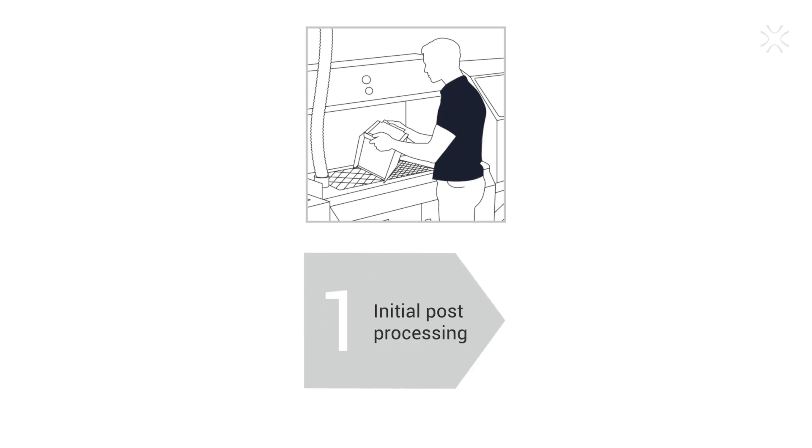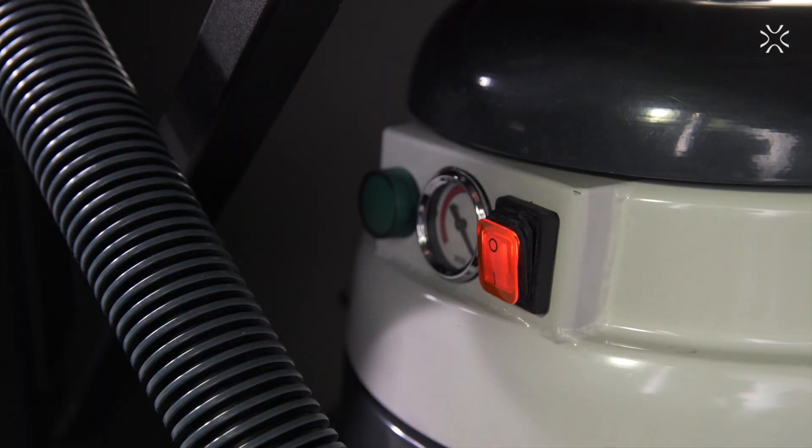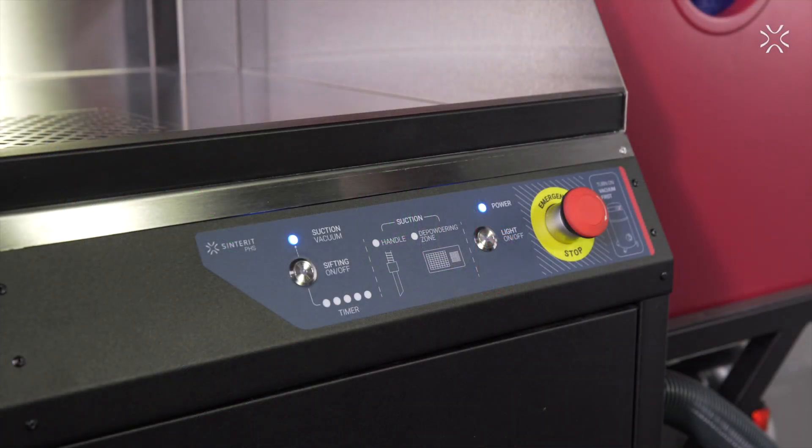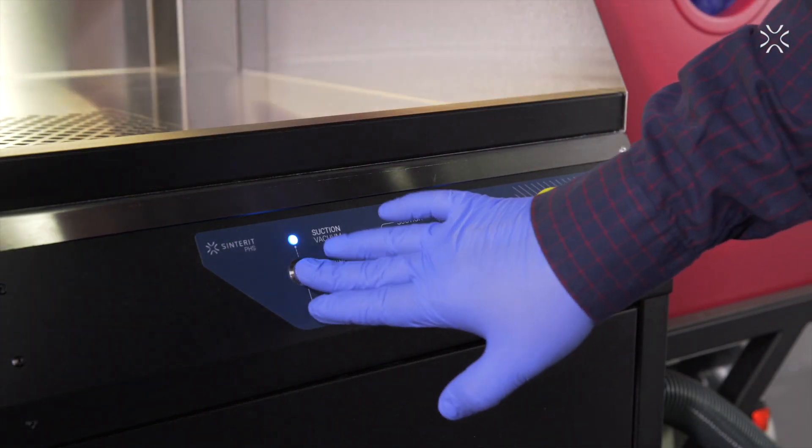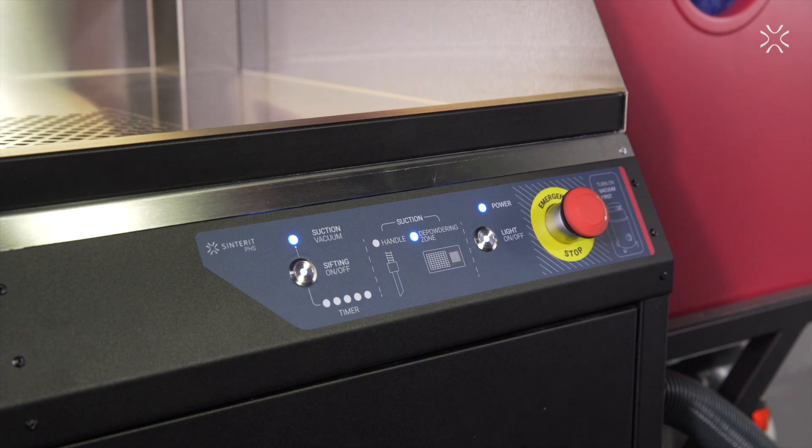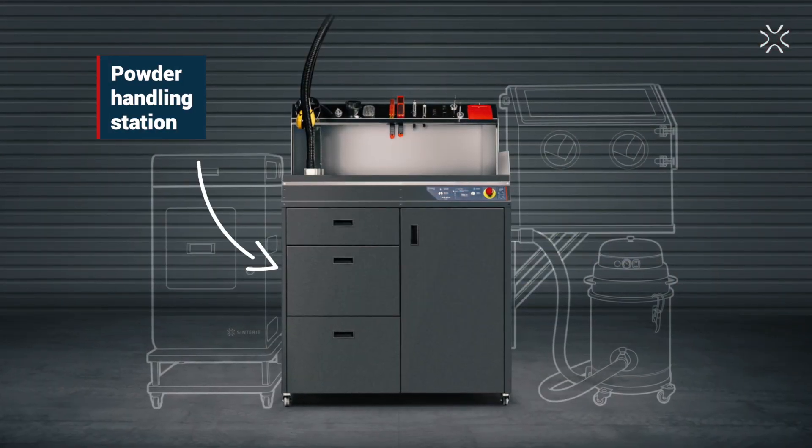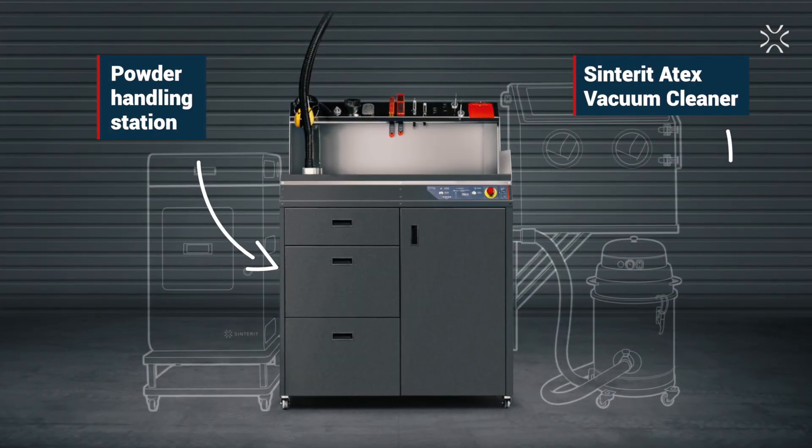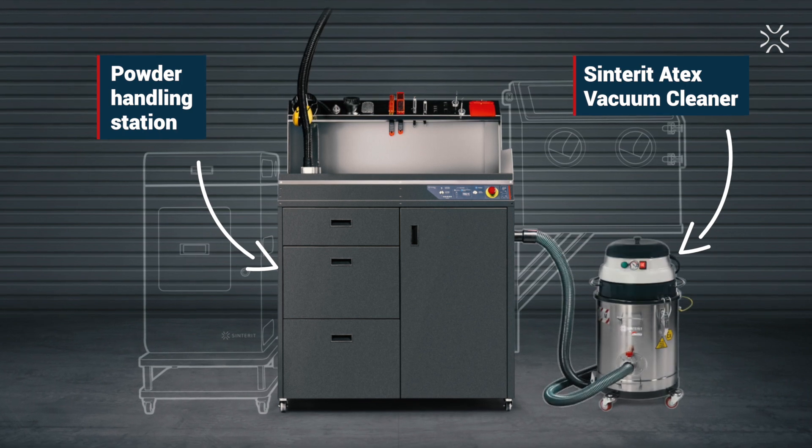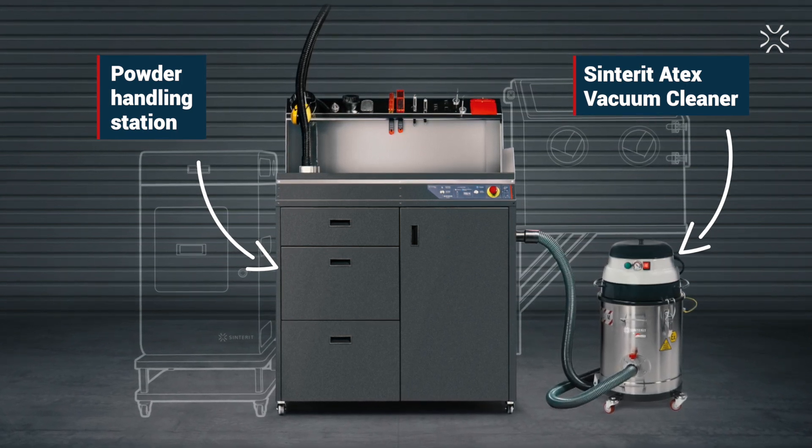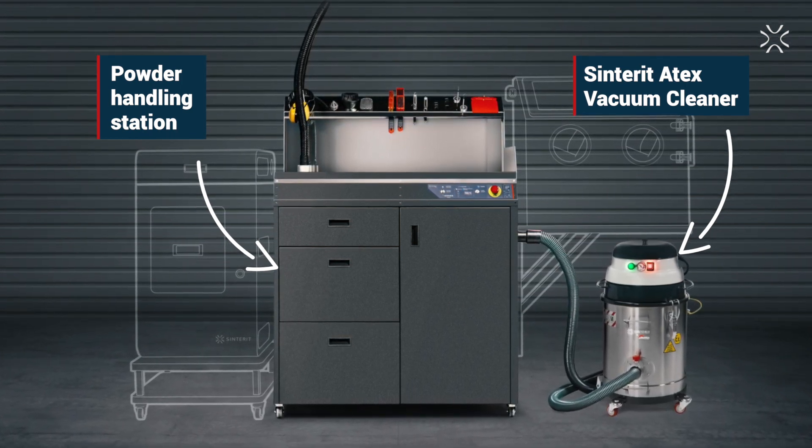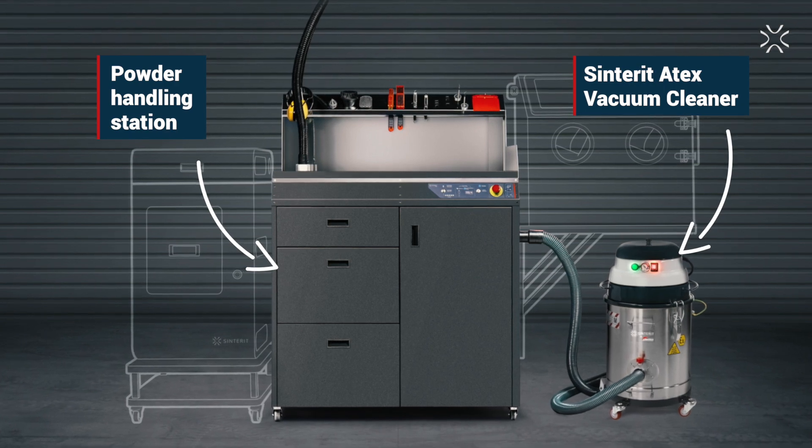How do you turn the PHS on? Simply turn on the Atex vacuum cleaner, then from the control panel turn on the lights and start the machine. You can consider the Centret Atex vacuum cleaner as a suction engine for the PHS. The vacuum cleaner is a device that you can turn on and off and the PHS will detect the suction and will work in sync with it.